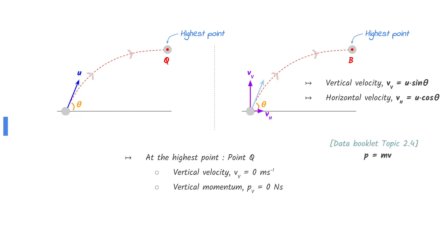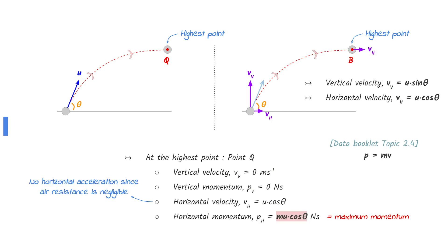At point Q, which is the highest point, the vertical velocity is zero. This means that the vertical momentum is zero. Horizontal velocity remains the same since air resistance is negligible. This means that the momentum at point Q equals the horizontal momentum of mu cosine theta.